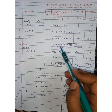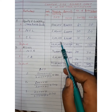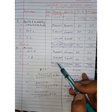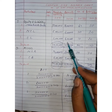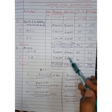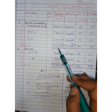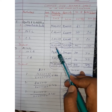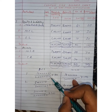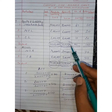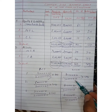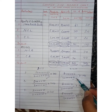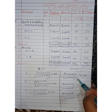एक बार फिर repeat कर देता हूँ — balance sheet में amount को percentage में convert करना है, दी हुई years की balance sheet के total के basis पर। 2019 में base amount 20 lakh उठाया और 2020 का base amount 30 lakh उठाया। Thank you।